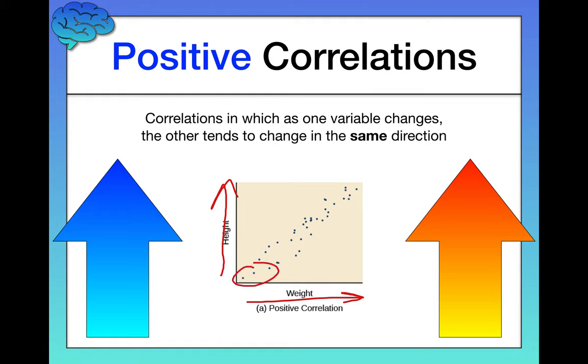People who are really short, for example, tend to weigh less, whereas people who are taller tend to weigh more, probably because they're taller. Now, I will note that you're always going to have some exceptions to this rule. Correlations describe the relationship between two variables among lots of different people.